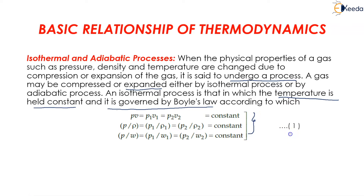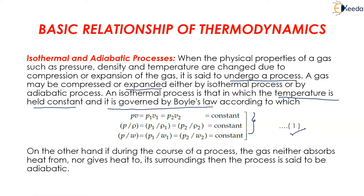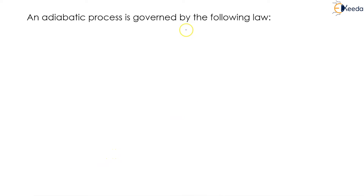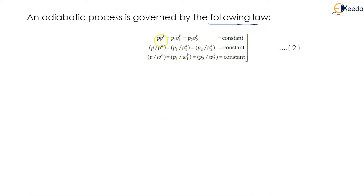These relations are termed as Equation 1. On the other hand, if during the course of a process the gas neither absorbs heat from nor gives heat to its surroundings, then the process is said to be adiabatic. An adiabatic process is governed by the following law: PV^k = P₁V₁^k = P₂V₂^k = constant, and P/ρ^k = P₁/ρ₁^k = P₂/ρ₂^k = constant.